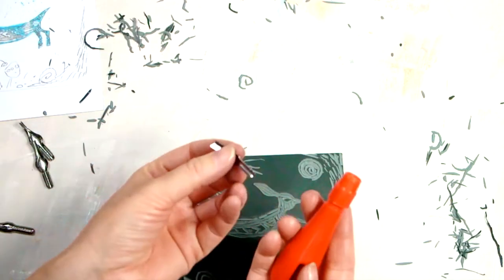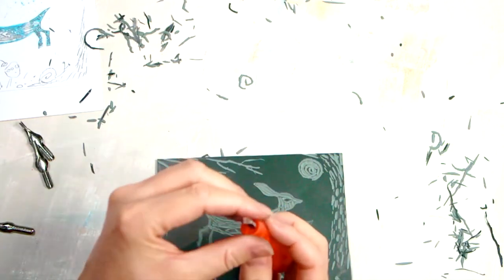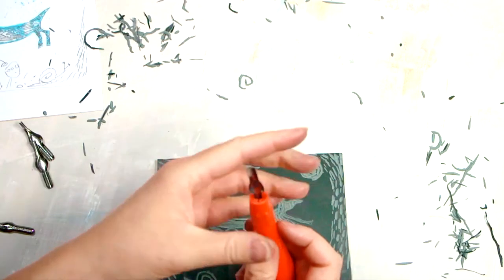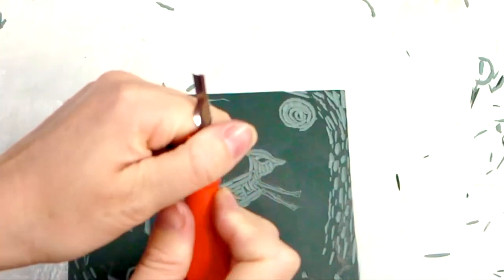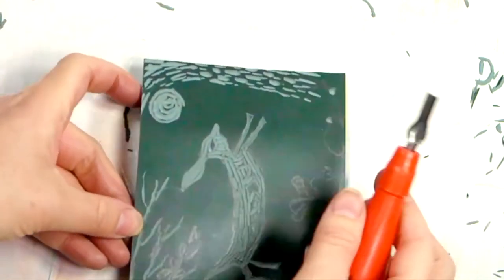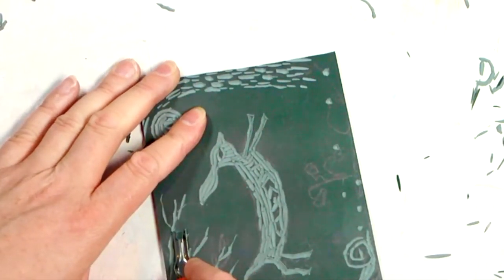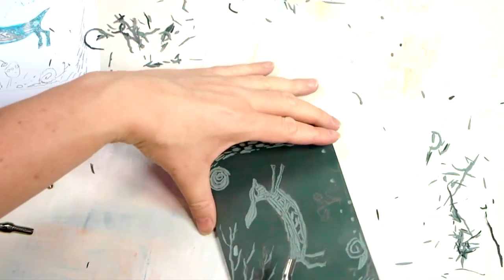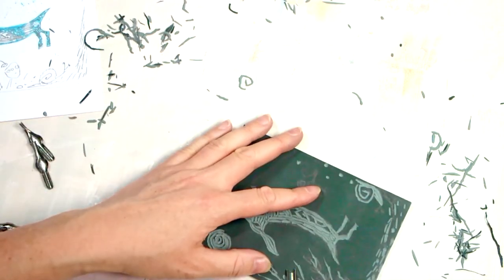Swapping now to blade number four, which is quite fat and quite wide, quite shallow. So it'll take away a lot from the surface of the lino. Digging in and then scooping out towards the end to try and create this leaf shape.